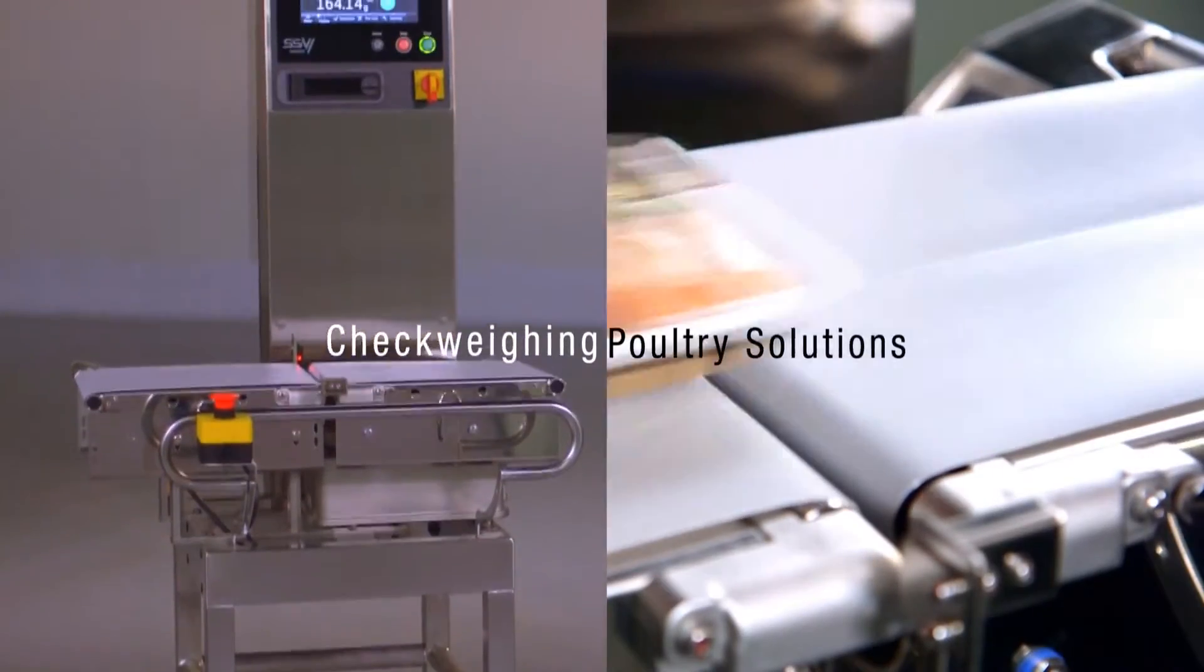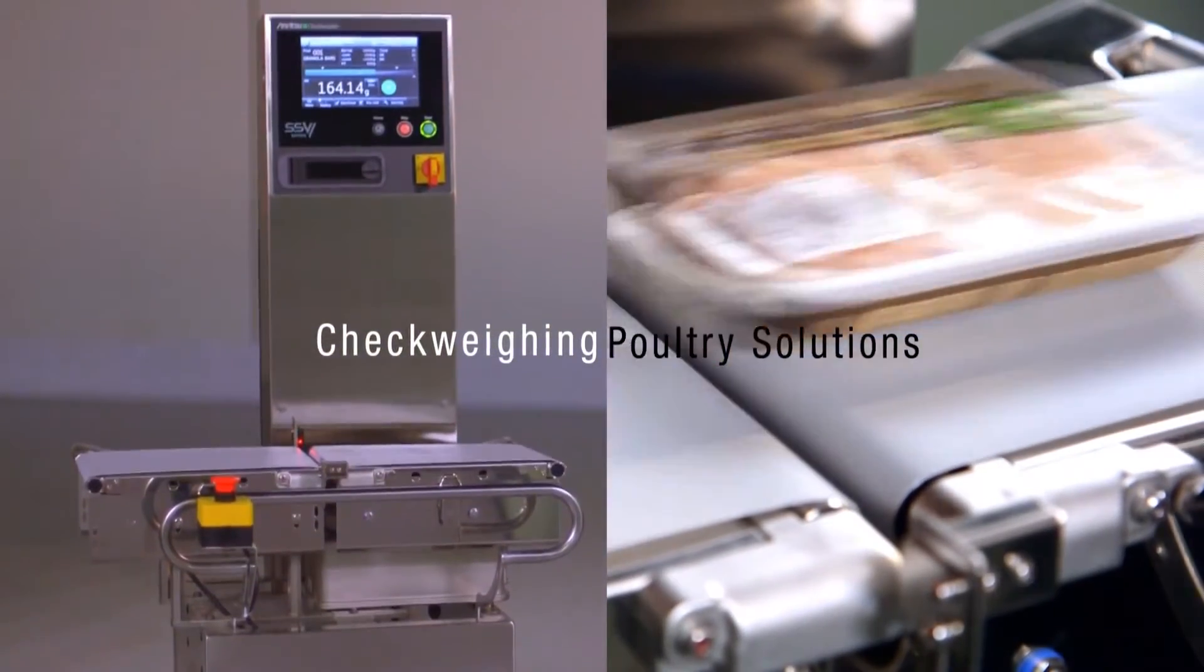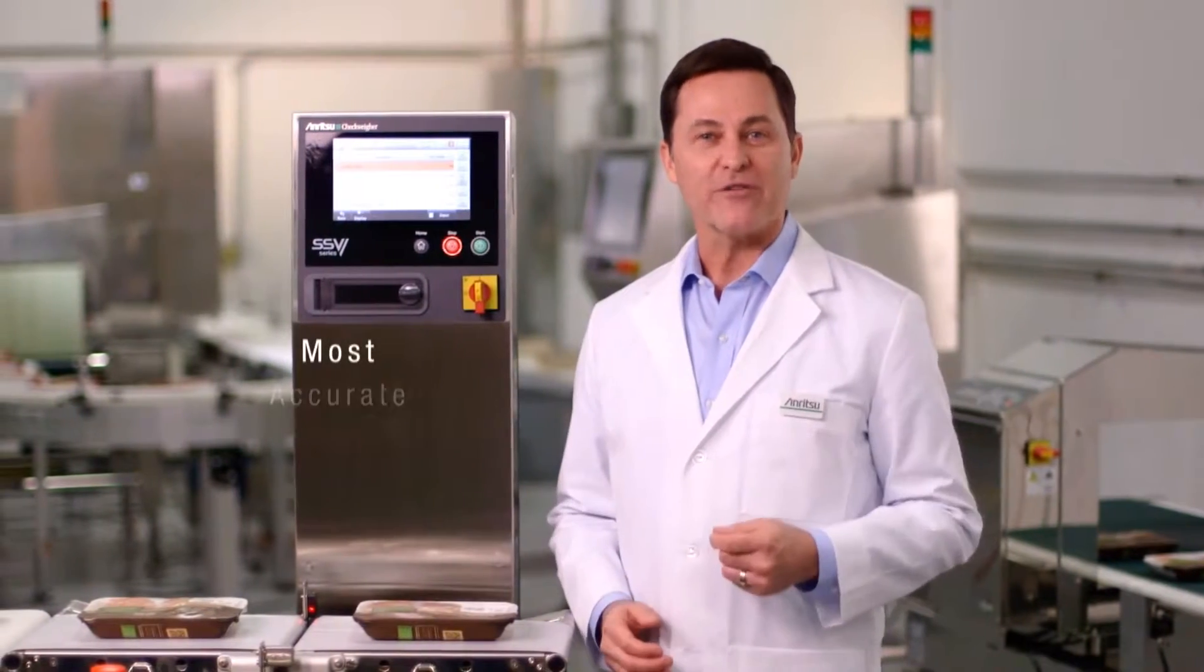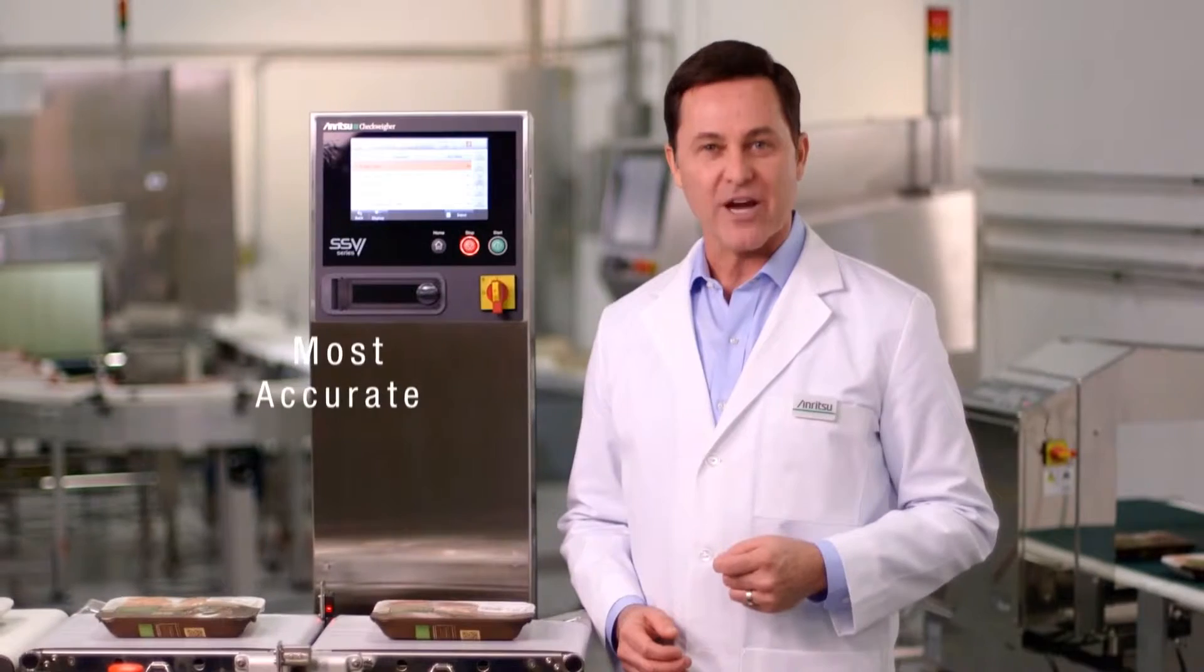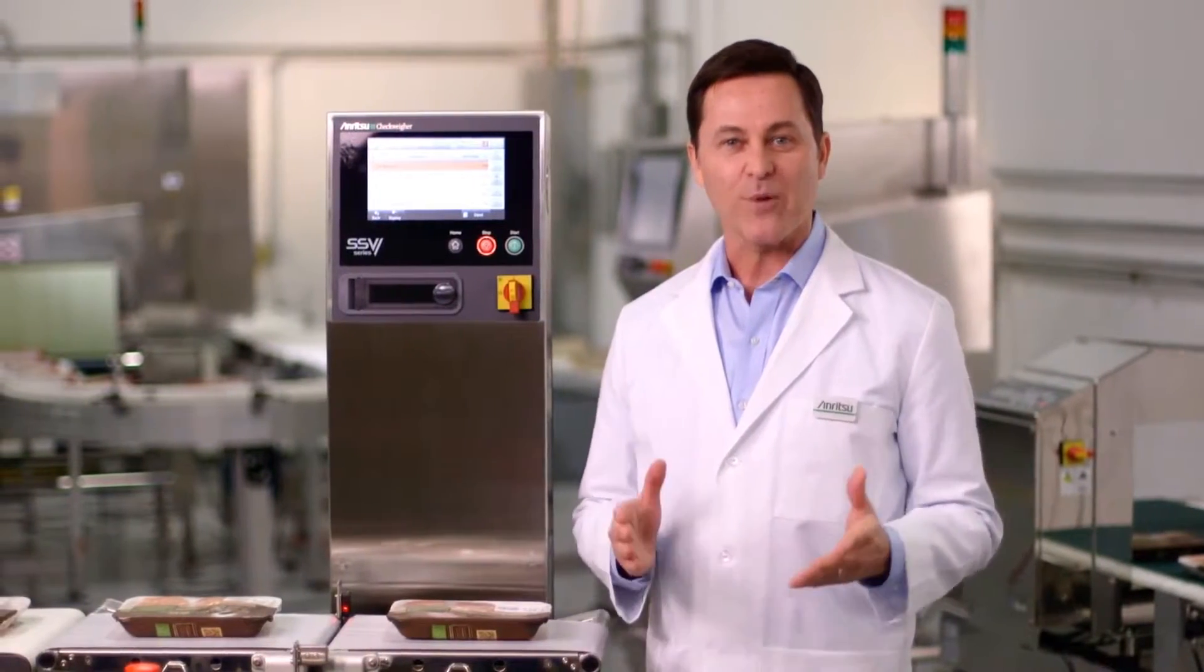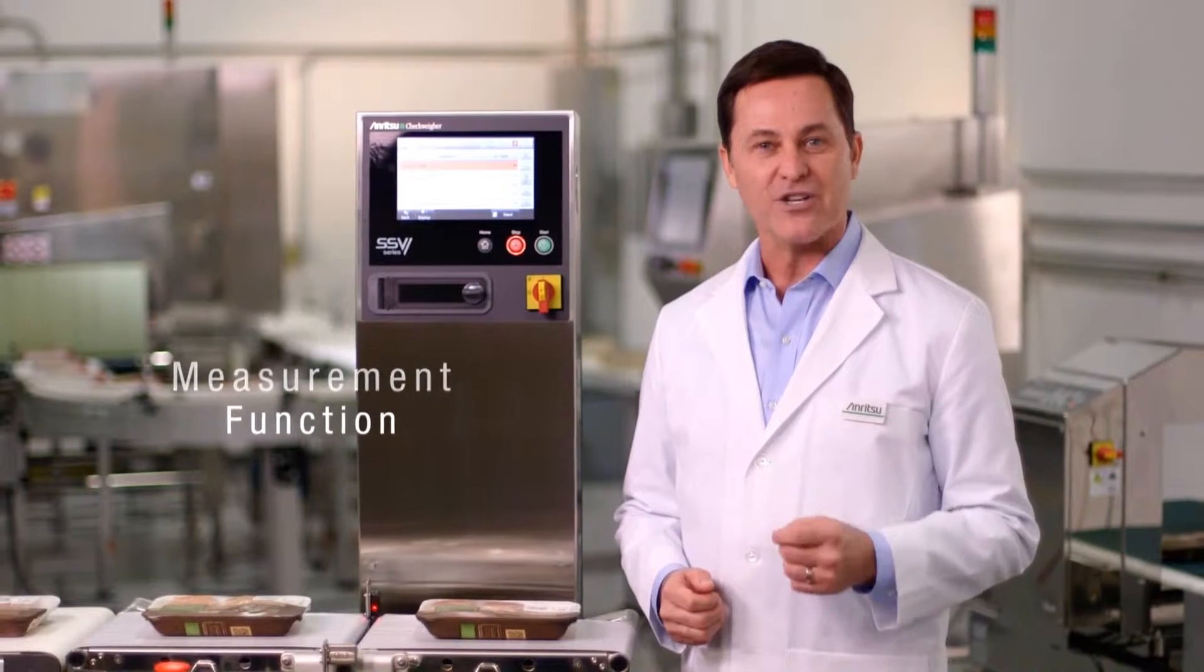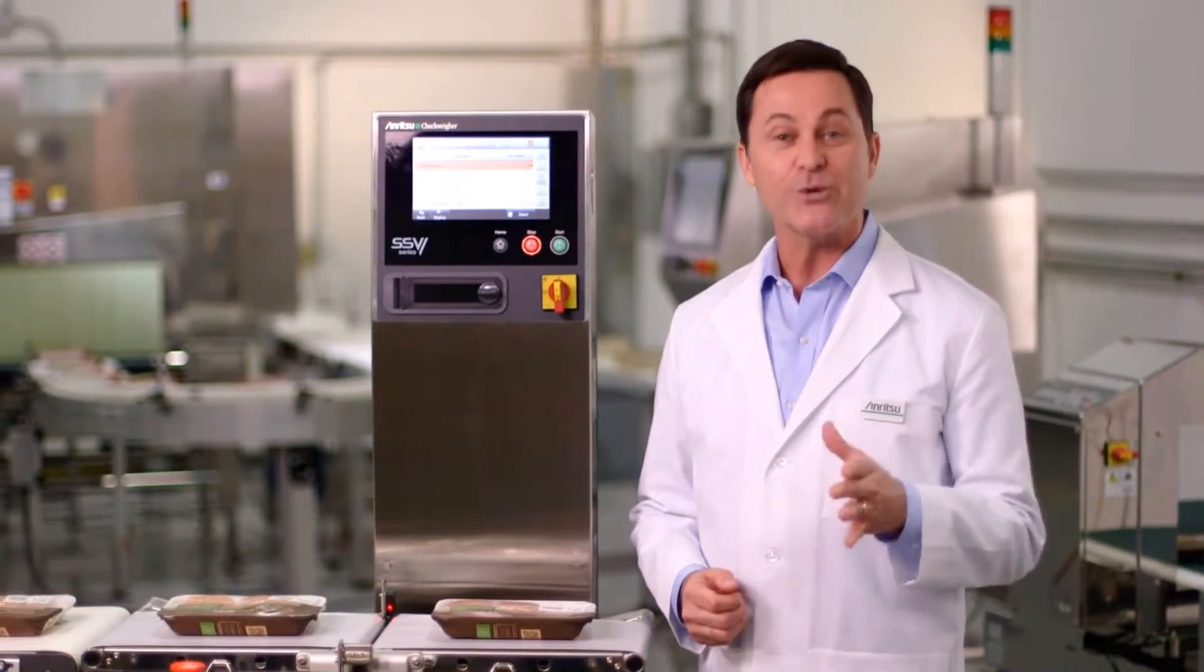Anritsu precision engineered check weighing solutions keep your poultry line running smoothly 24-7. In fact, Anritsu manufactures the most accurate poultry check weigher system on the market. And with our proprietary smart measure function, you'll be able to balance production and the accuracy you need to achieve your goals.